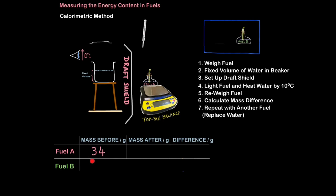Notice how to draw a table properly. The independent variable always goes in the left hand column, in other words what you change in the experiment. So I'm changing the type of fuel. And the dependent variable, in other words what I measure, which is mass, goes in the next few columns.